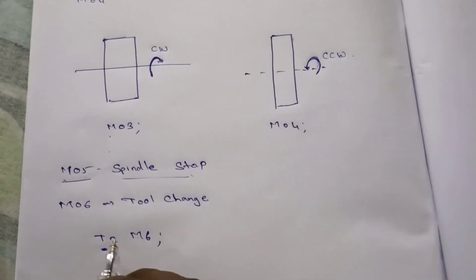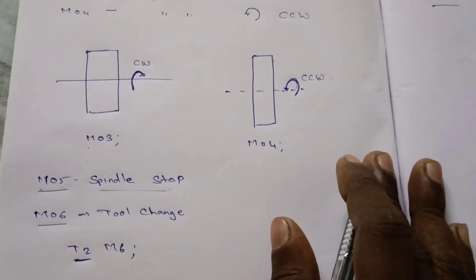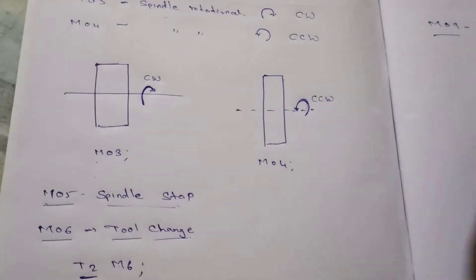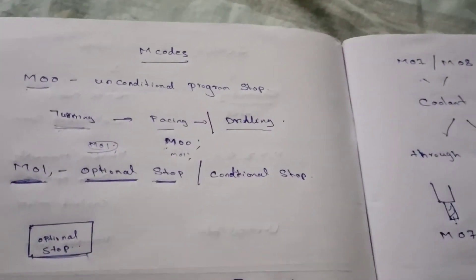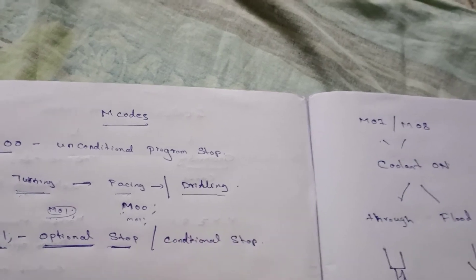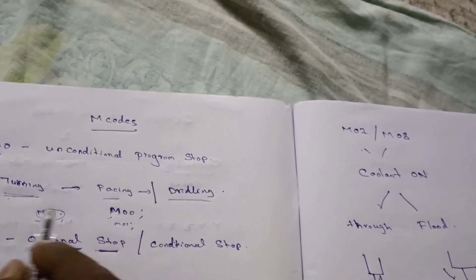Next, M06. This code is used for tool changing purpose. As we discussed, on a part, turning, facing, and drilling are going on. For these three different operations, we use three different tools.